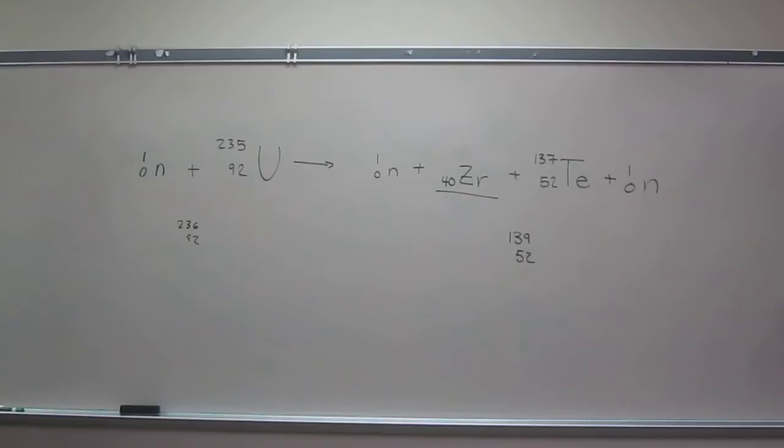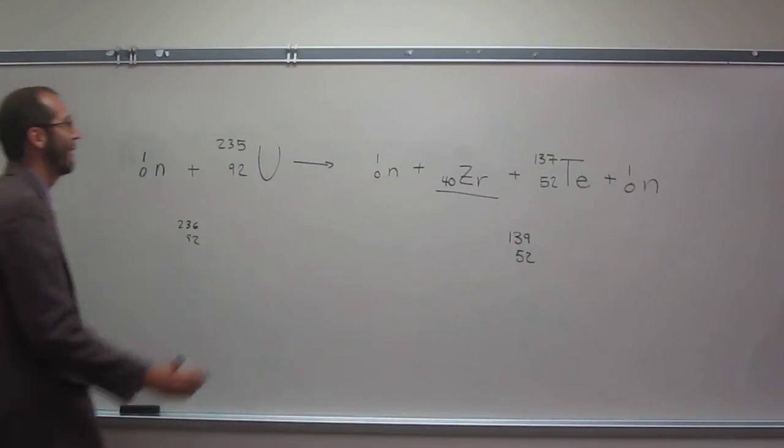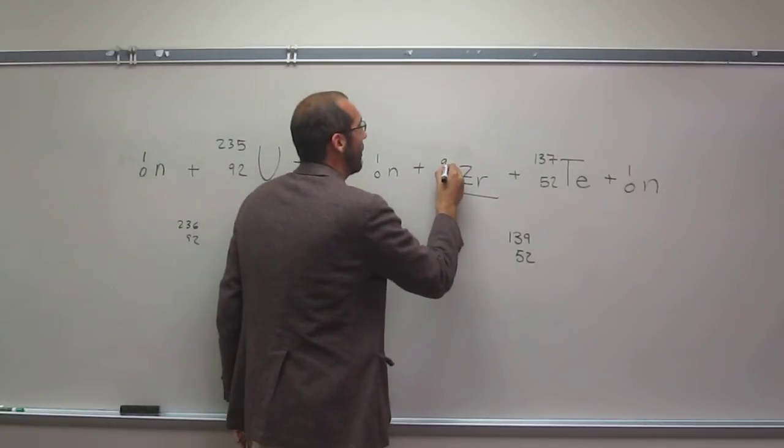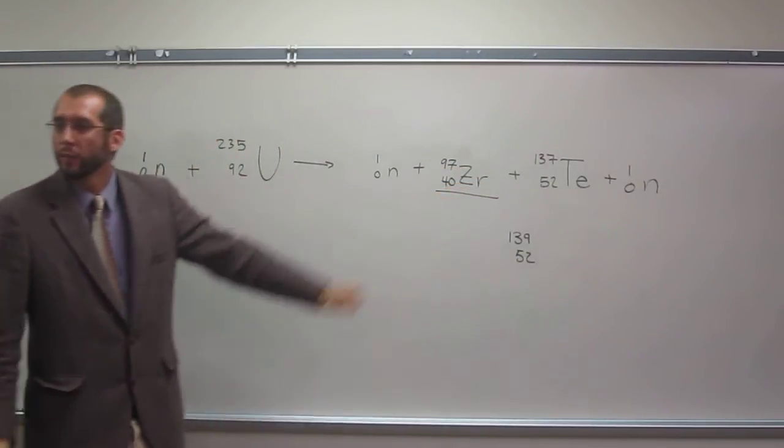So 136 minus 139 is going to be, what, 97. Is that right? Okay, 97. So this is going to be zirconium 97.